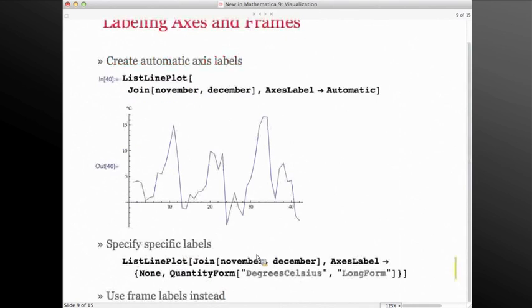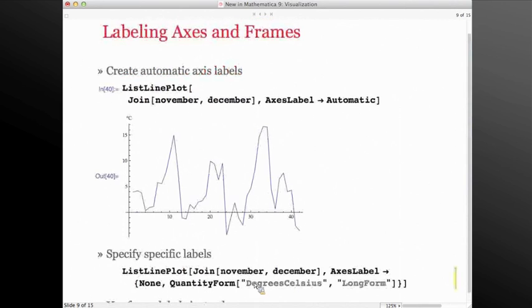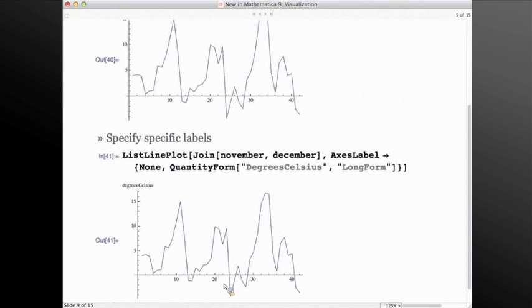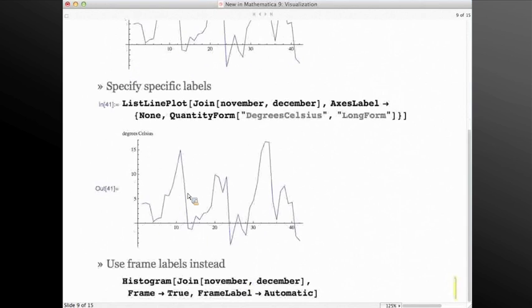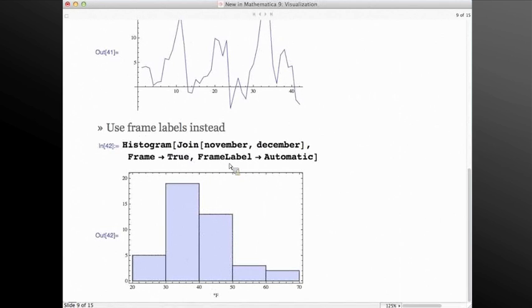So we can also specify exactly what type of labels we want. So here's the same one. I'm going to say that I don't want any label on the x-axis. And on the y-axis, I want degrees Celsius and I want the long form of it without a tool tip or anything. So then here we get the spelled out degrees Celsius as the label for our axis. And, of course, we can do the same thing for frame labels, in this case, histogram, and it's choosing Fahrenheit as the units to use from that mixed data set. And I've turned the frame on and we have Fahrenheit down here on the x-axis, which is the appropriate axis for histogram to show for the units.